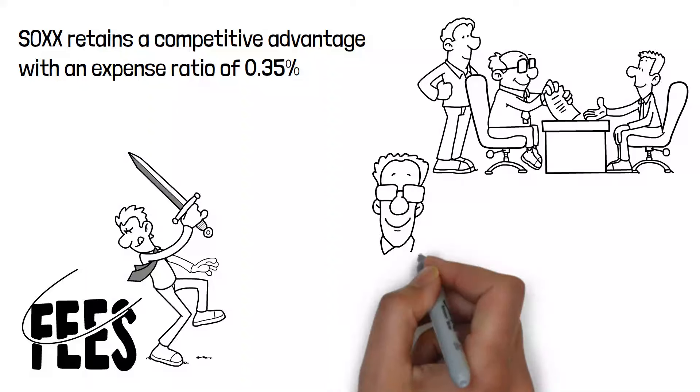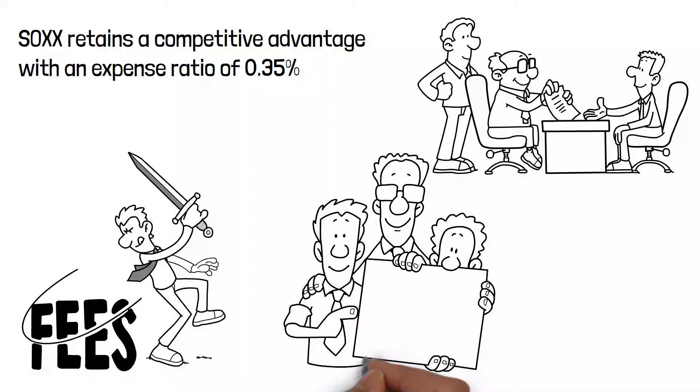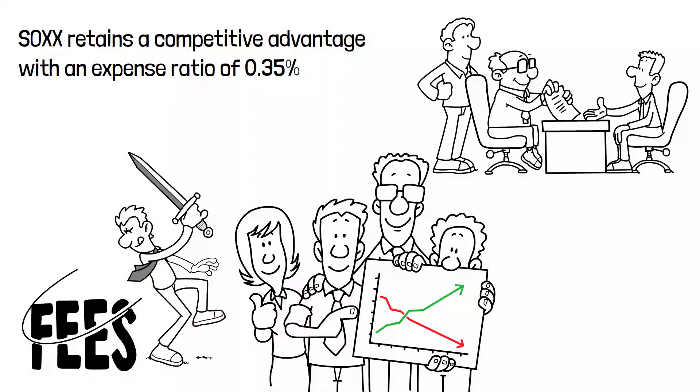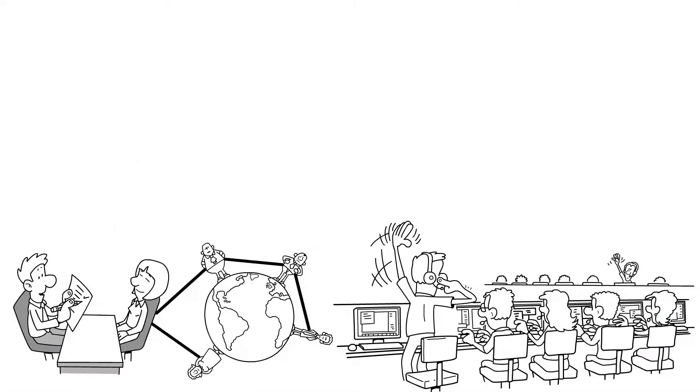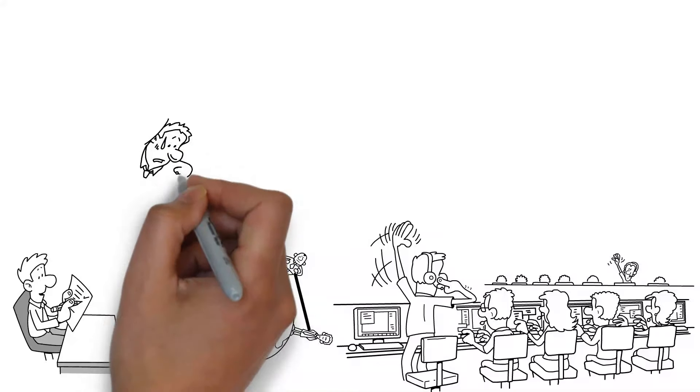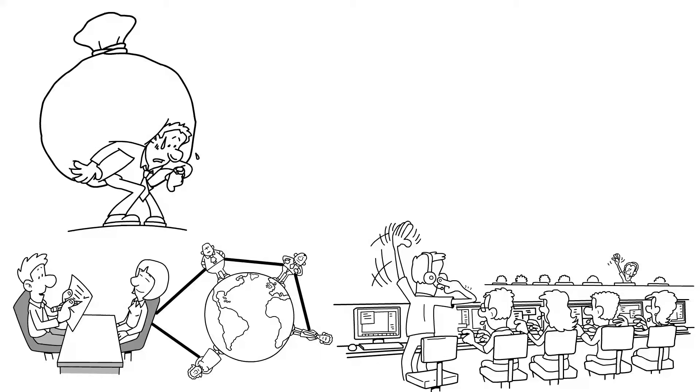The performance of SOXX not only demonstrates the development potential of the semiconductor industry, but also indicates the cyclicality and volatility connected with this sector. Factors such as global supply chain dynamics, technical breakthroughs, and economic circumstances strongly affect the success of semiconductor firms and, by implication, the ETF itself.